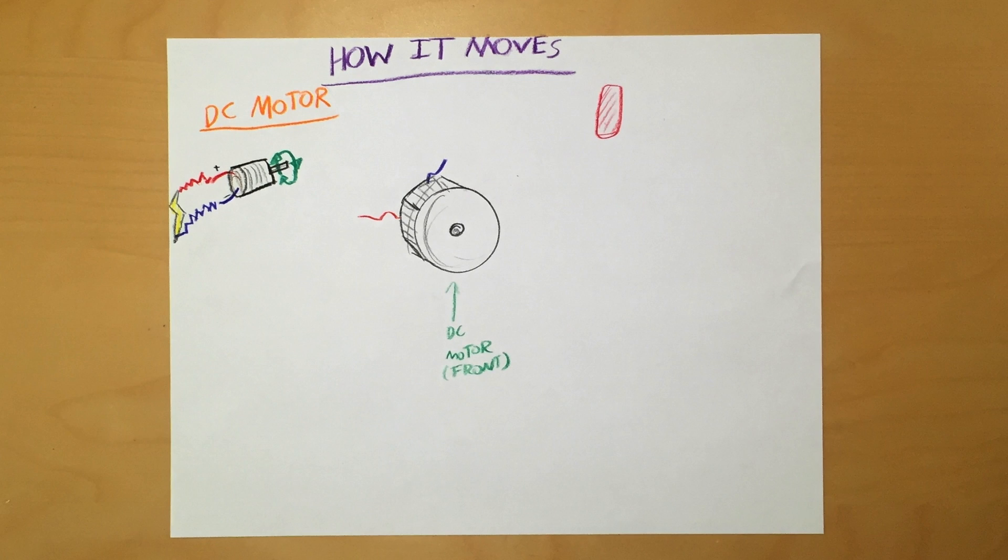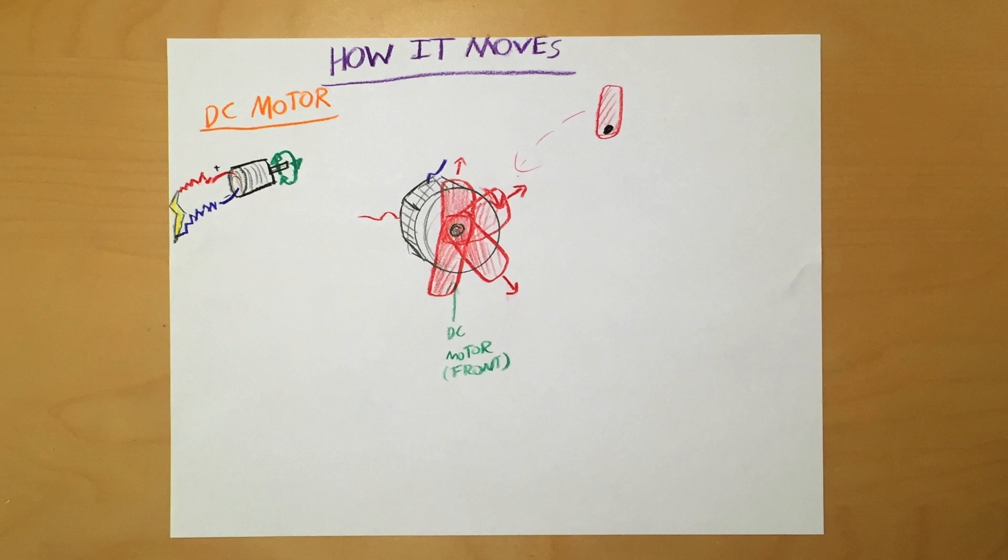The imbalanced weight, in this case an eraser, is attached to the shaft of the motor. When the motor is turned, the eraser spins. Since most of the eraser's weight is on one side of the motor, its inertia pulls the Jitterbot in that direction.